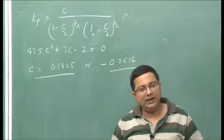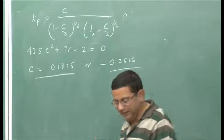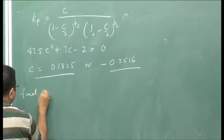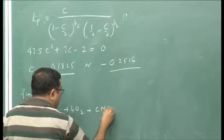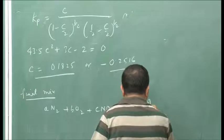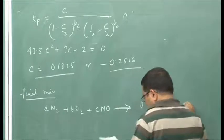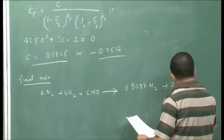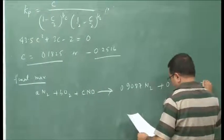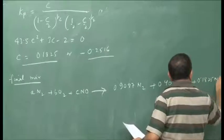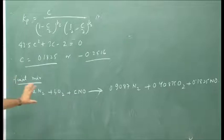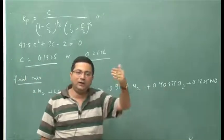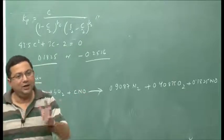Once we have C, we can estimate A and B. The final mixture is: 0.9087 N2 + 0.40875 O2 + 0.1825 NO. This is how we get the final composition. Once we have the final composition and the final temperature, we can determine how much heat is required.